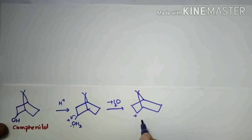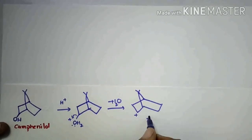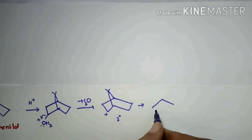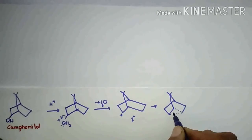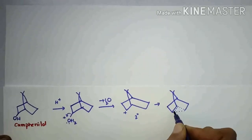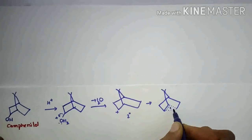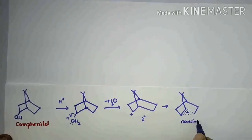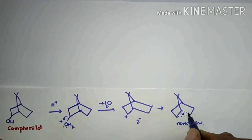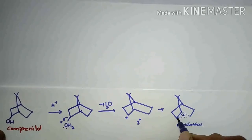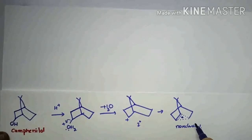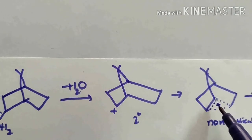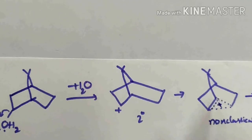It is a non-classical carbocation — it is a secondary carbocation — so it will form a non-classical carbocation. Non-classical carbocation means a three-center, two-electron carbocation. In a non-classical carbocation, the positive charge is equally distributed among these three carbons.